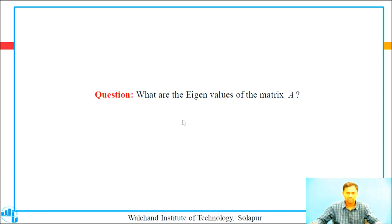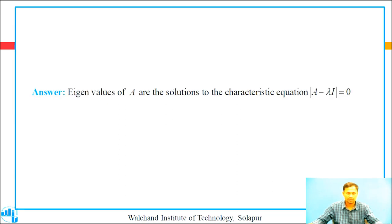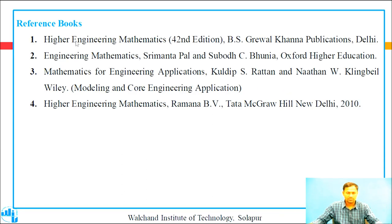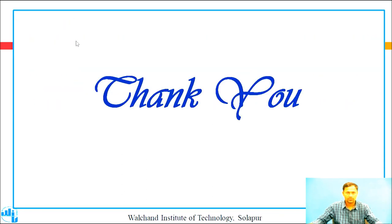I hope all students understand the eigenvalues and eigenvector concepts and every student can answer: what are the eigenvalues of the matrix? Eigenvalues of A are the solutions to the characteristic equation det(A minus lambda I) equal to 0. These are the reference books. Thank you.